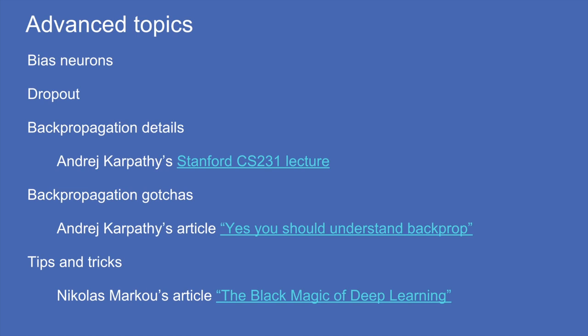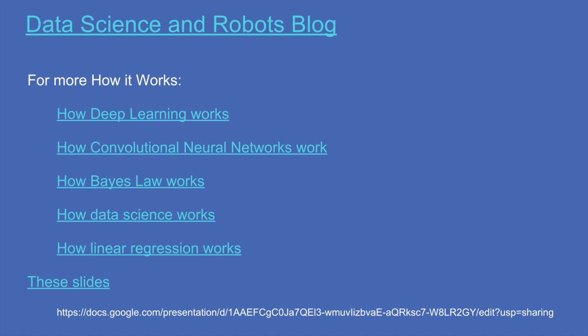What we've covered is a very basic introduction to the principles behind neural networks. I haven't told you quite enough to go out and build one of your own, but if you're feeling motivated I highly encourage it. A few useful resources: you'll want to learn about bias neurons, dropout as a training tool, resources from Andrej Karpathy who is an expert in neural networks and great at teaching, and a fantastic article called 'The Black Magic of Deep Learning' with practical tips. Visit my blog for more how-it-works style posts, and links to these slides are in the comment section. Thanks for listening.